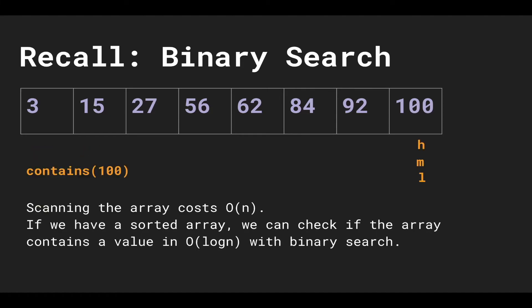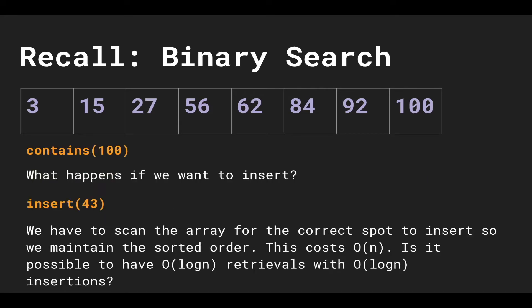This is great — it performs in logarithmic time, which is the second fastest next to constant. But what happens if we want to insert into our array? Say we want to insert 43. Because this is a sorted array, we have to scan for the correct spot to maintain sorted order, which costs O(n). So is it possible to still have O(log n) retrievals but also keep insertions and deletions logarithmic?